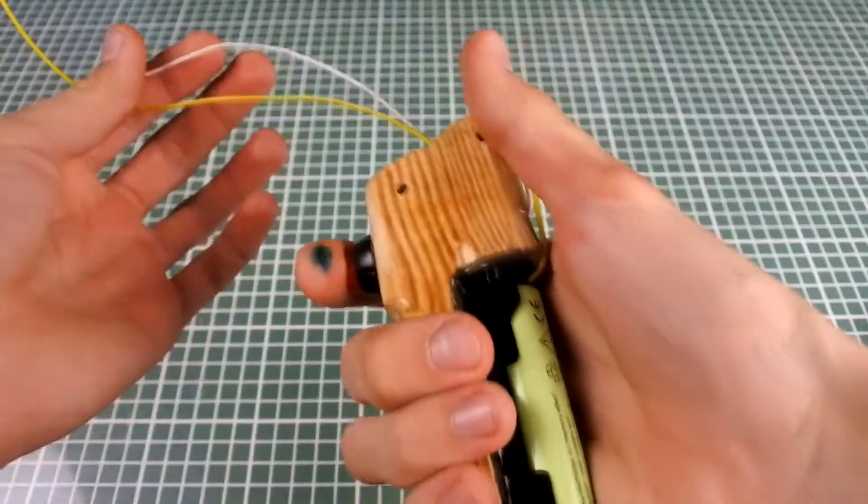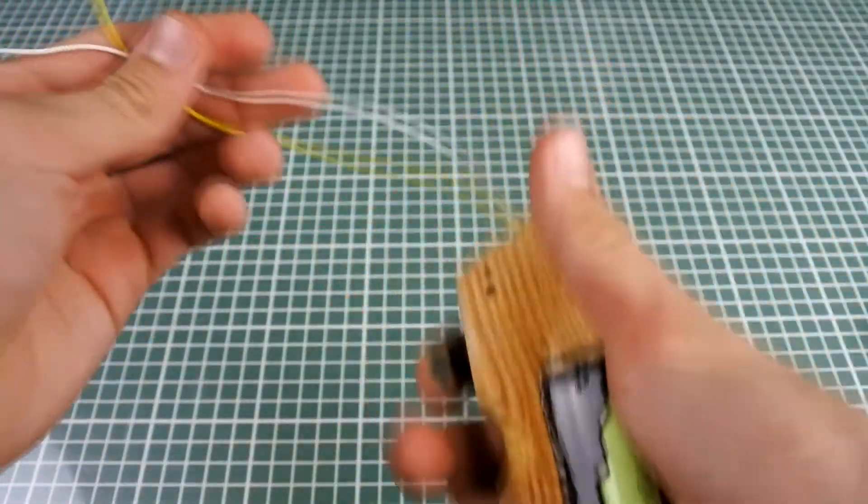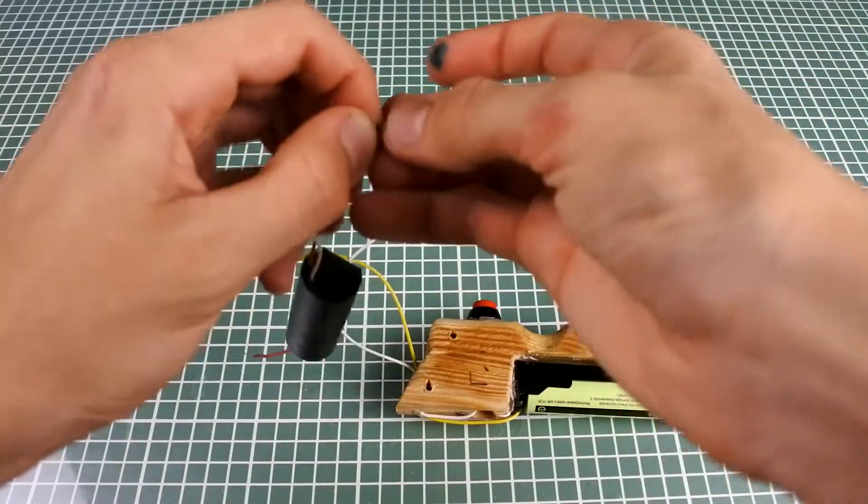So when we turn on the button, on these two wires there is a 4 volts voltage. But it's really small voltage.